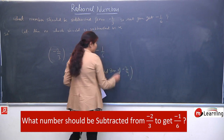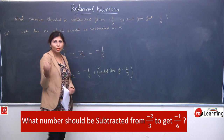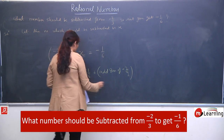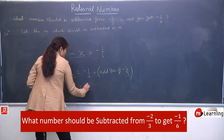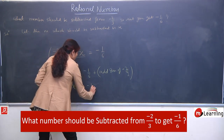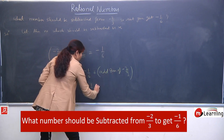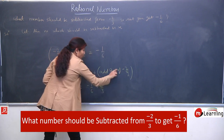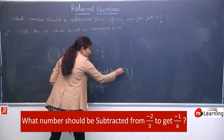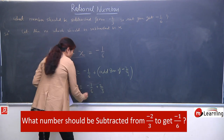So yahan par hum ne carefully jo nikalna hai unknown, use left hand side pe rakha. Equals to minus 1 by 6, plus — again wahi procedure — additive inverse of minus 2 by 3. Aap directly bhi le ja sakte hain, it depends on you. Now minus x equal to minus 1 by 6. The additive inverse of minus 2 by 3 is plus 2 by 3, because opposite sign ho jayega.